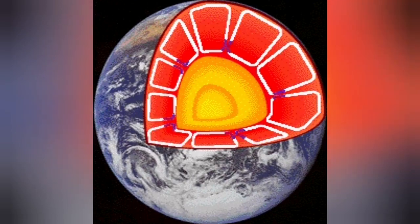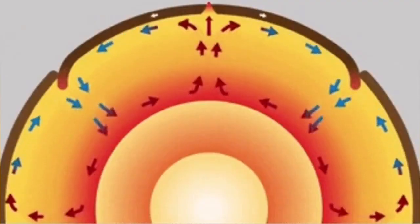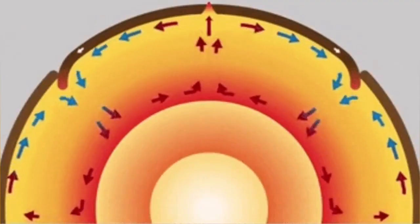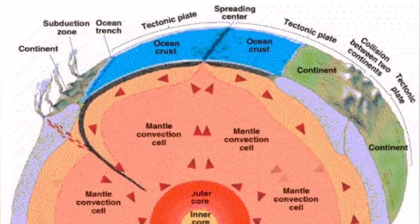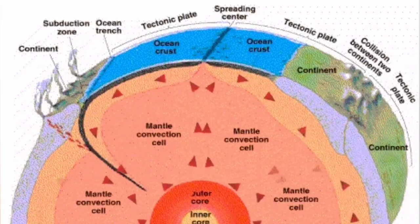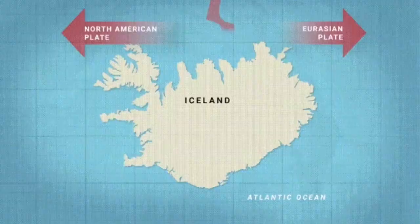This heat creates convection cells through the mantle of the Earth, which rises to the surface and cracks the hardened solidified crust of the Earth, we call it lithosphere. And through these cracks, magma can erupt.